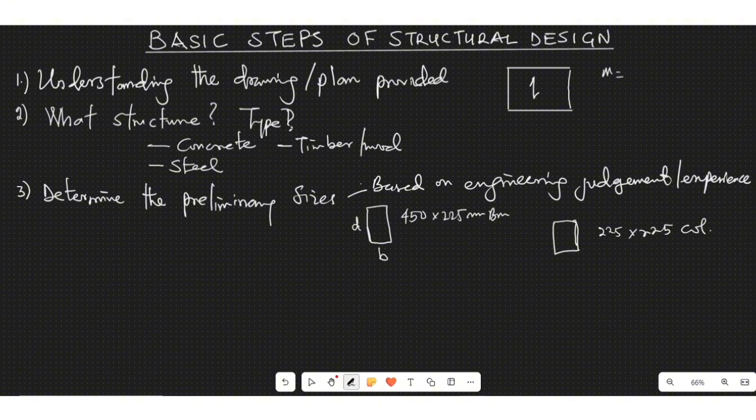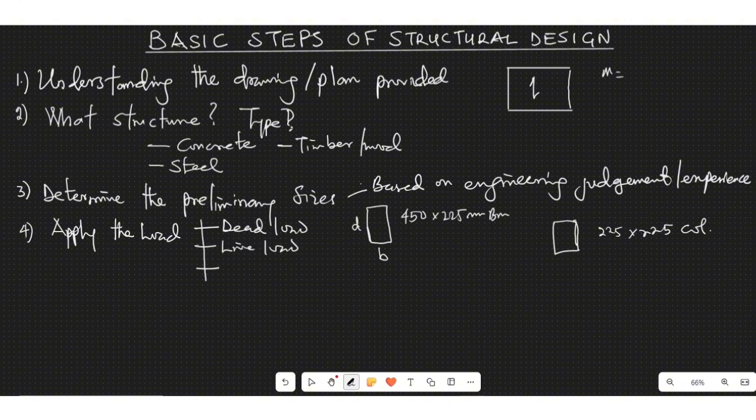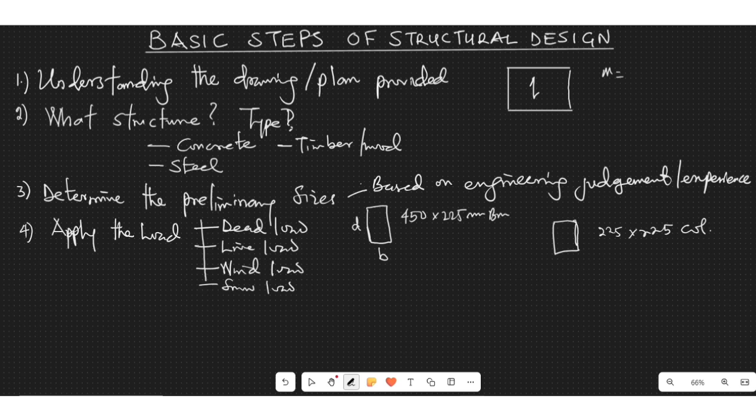The next one that you would need to do is to apply your load. And you know before now that we have different kinds of load. We have the dead load, we have the live load, we have different kinds of load depending on what you're working on: wind load, we may have the snow load, and all of that. So once you apply this load, you determine what the dead load is, which are loads of the structure itself and permanent elements.